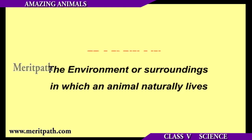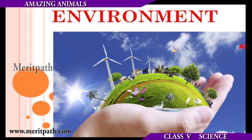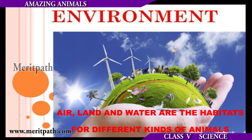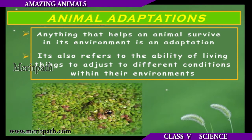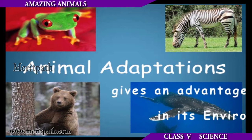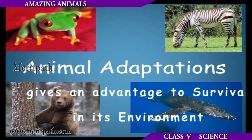The environment in which an animal lives naturally is called its habitat. Air, land, and water are the habitats for different kinds of animals. Animals living in a habitat adapt themselves in many ways to survive in the given environment. An adaptation is a feature that gives an animal an advantage for survival in its environment.